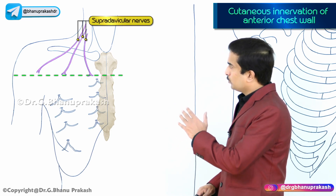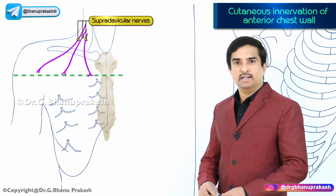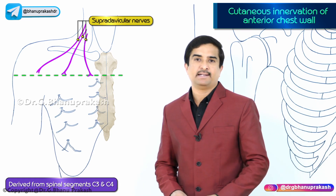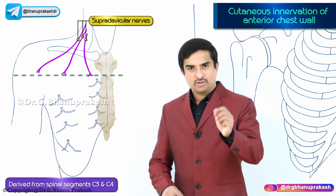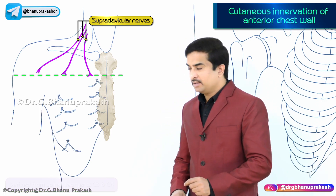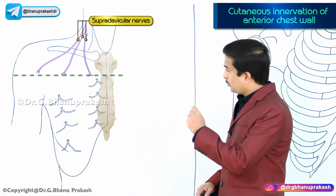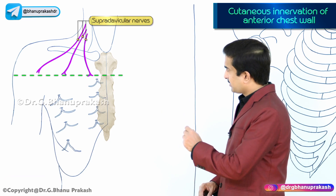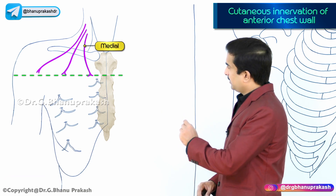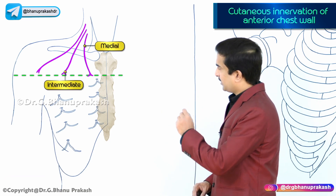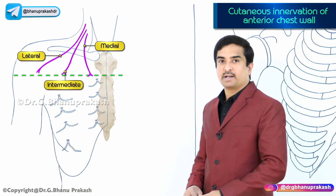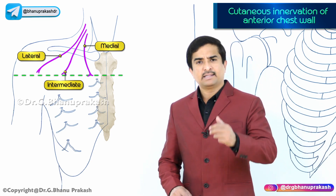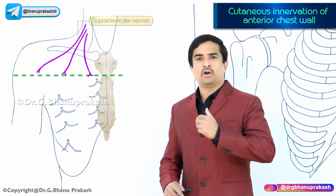The skin above this horizontal line is supplied by three supraclavicular nerves derived from spinal segments C3 and C4. These three supraclavicular nerves are named the medial, intermediate, and lateral supraclavicular nerves.